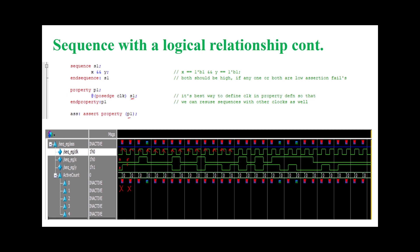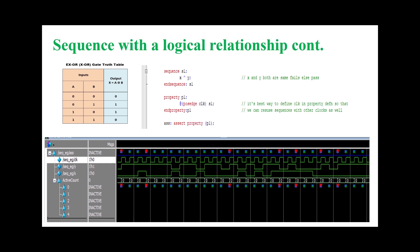Looking at the AND waveform: at the first clock edge x is 0 and y is 0, so assertion is failing. At the next edge x is 0 and y is 1 — assertion is failing because we need both high. At the following edge x is 0 and y is 1 — assertion still fails. Then x is 1 and y is 1, both are 1, so the assertion is passing.